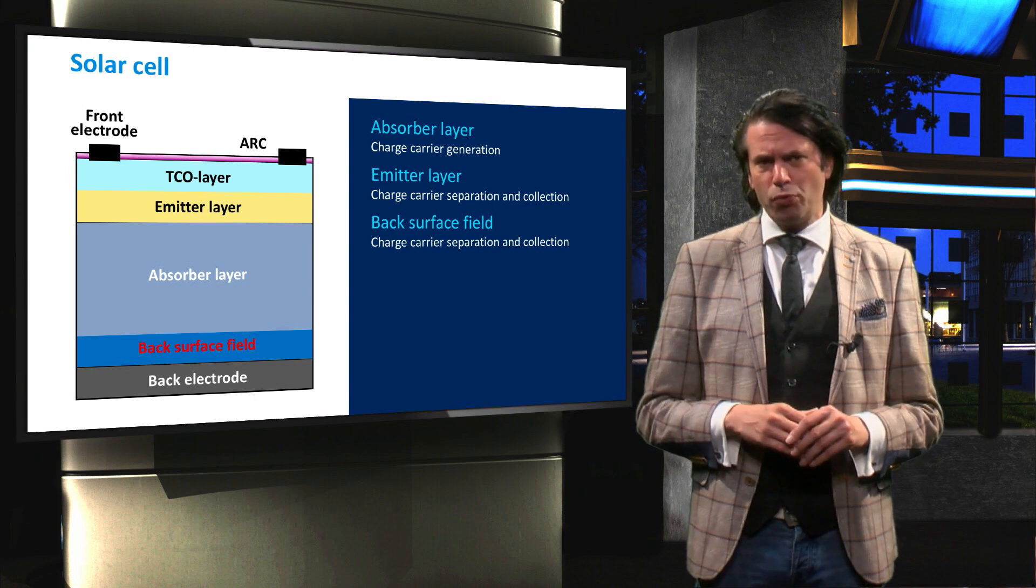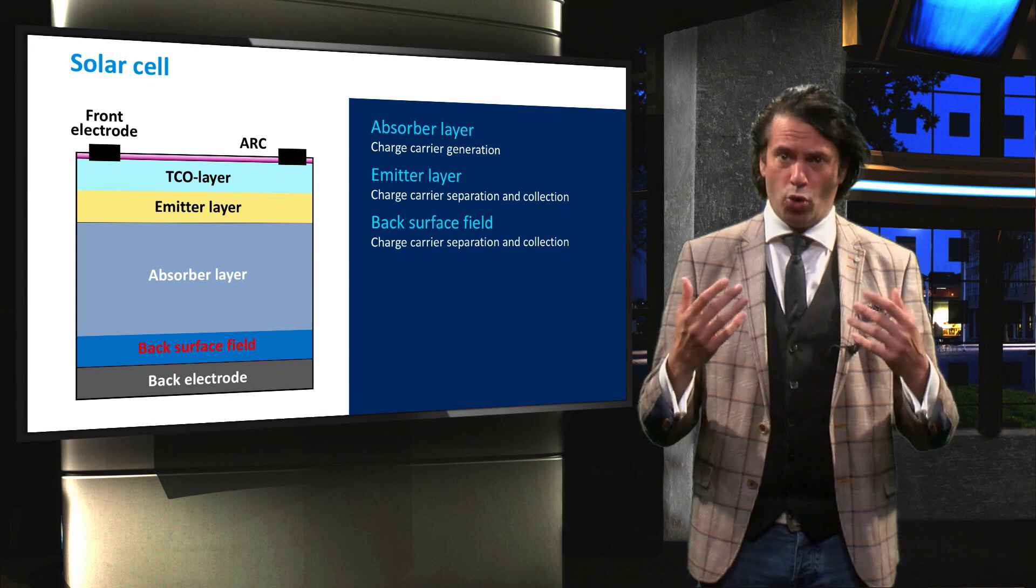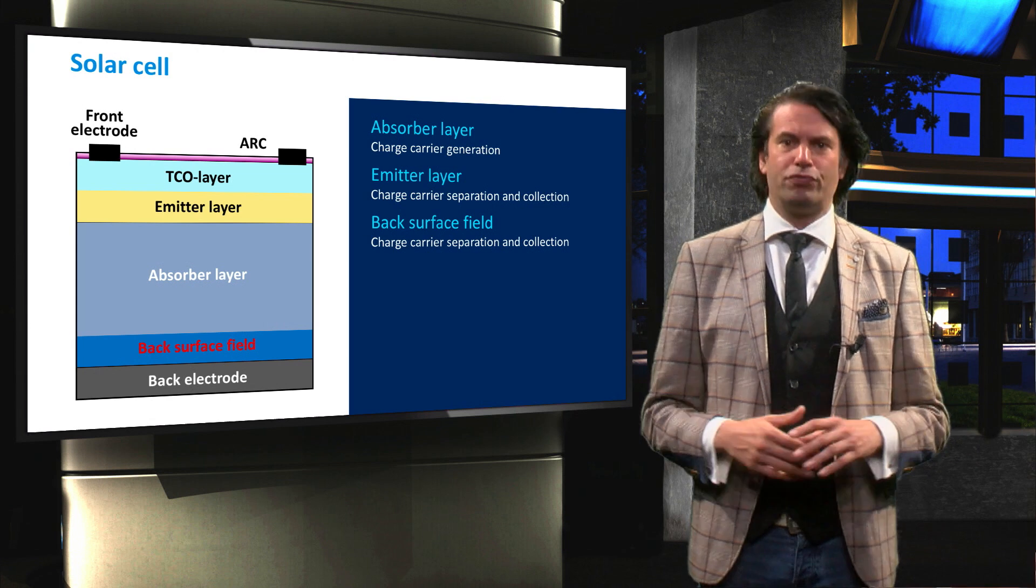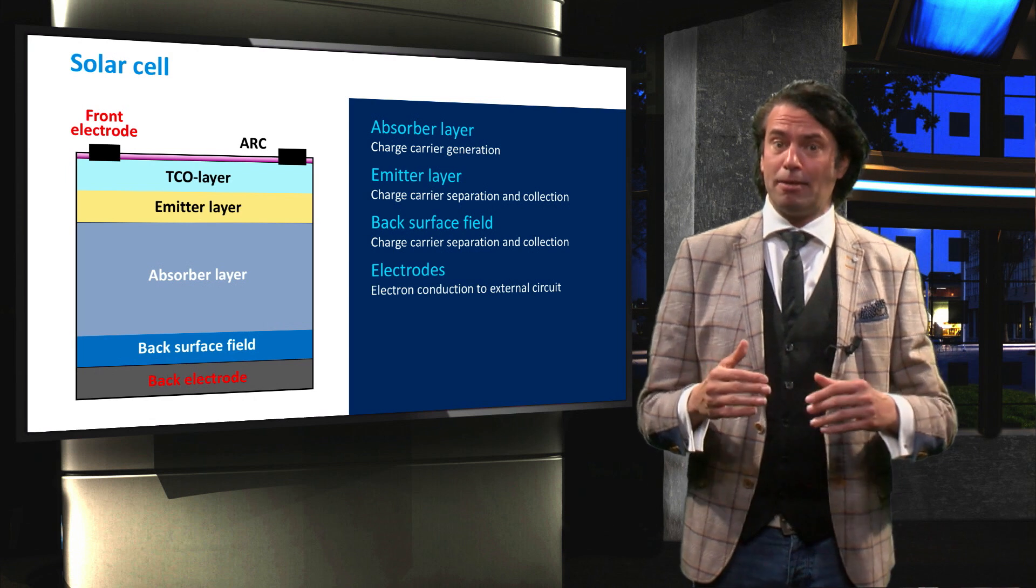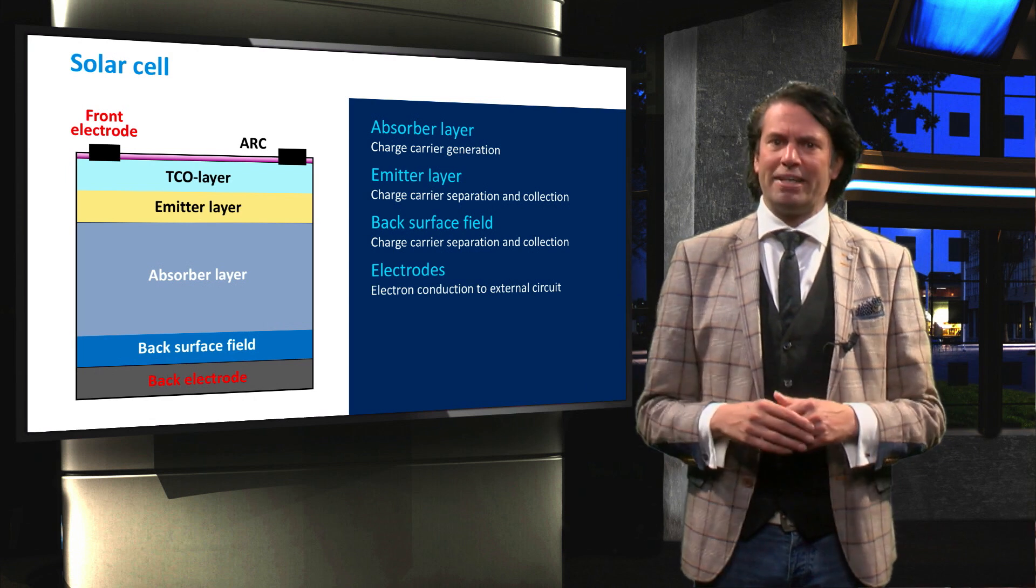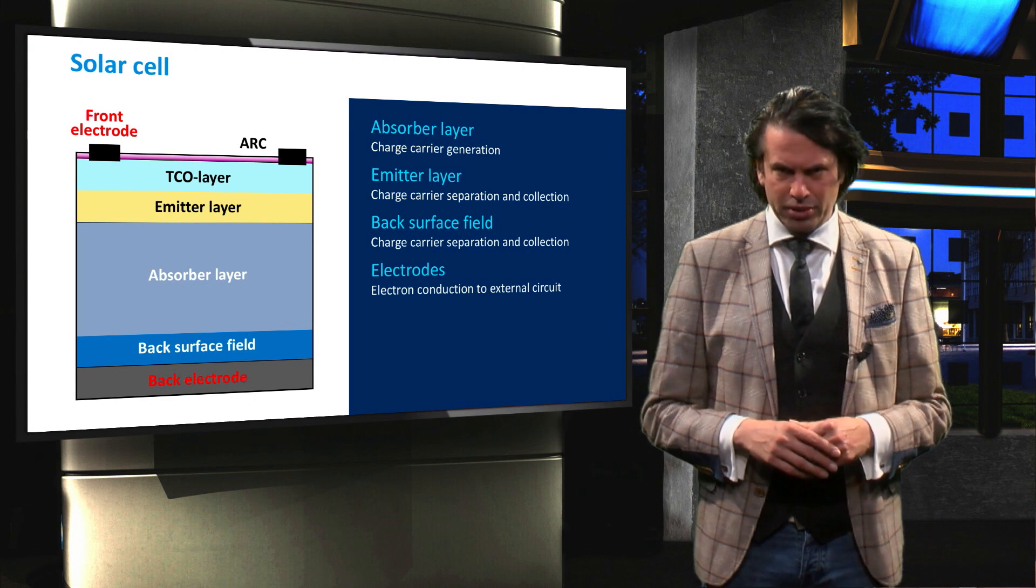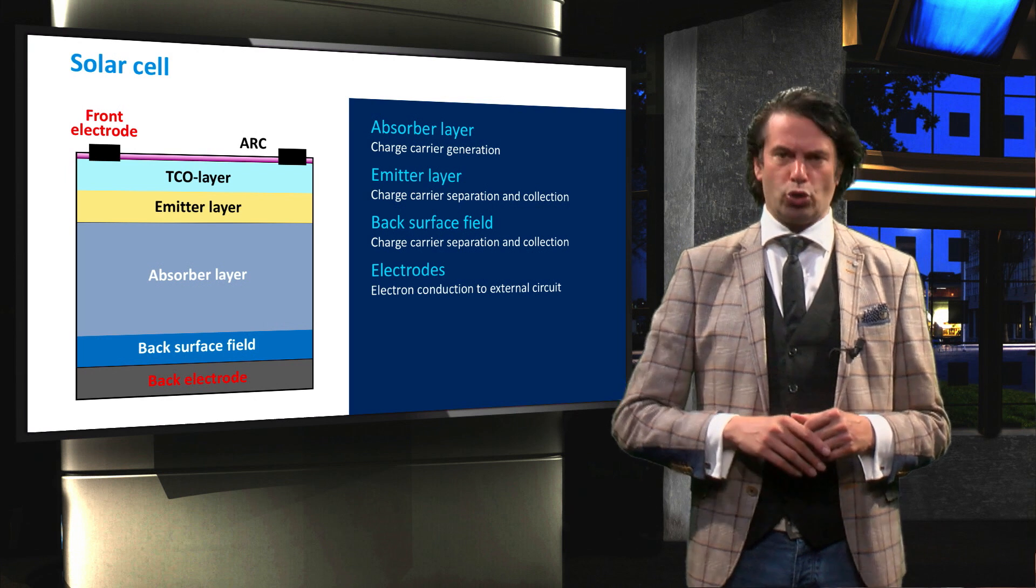With the BSF and the emitter we can separate electrons and holes to either side of the solar cell. In order to collect these carriers and send them to an external circuit, metallic contacts or electrodes are needed at both sides of the solar cell.